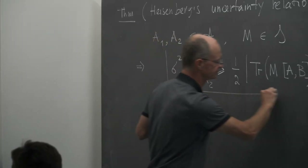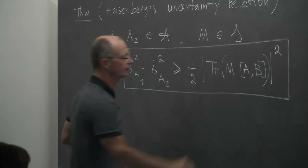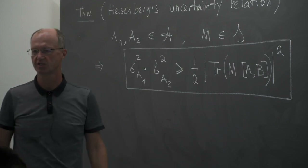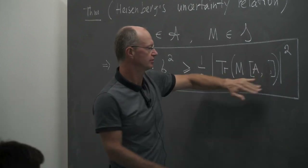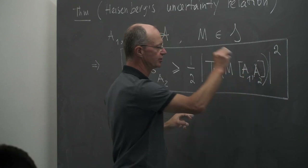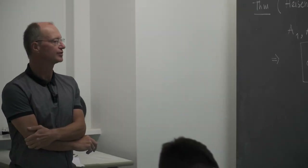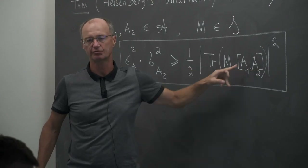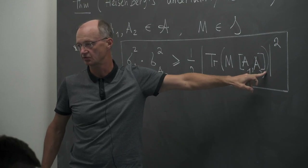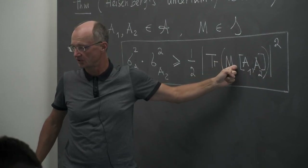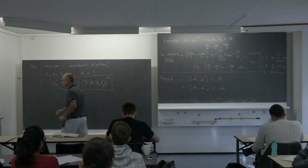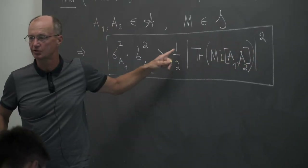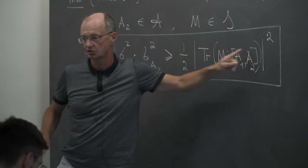That is a very interesting inequality. A formal remark: the commutator [A₁, A₂] is not strictly an observable — if you multiply it by i it becomes an observable. Since we have an absolute value, you can if you want insert an i or minus i here without changing the situation.